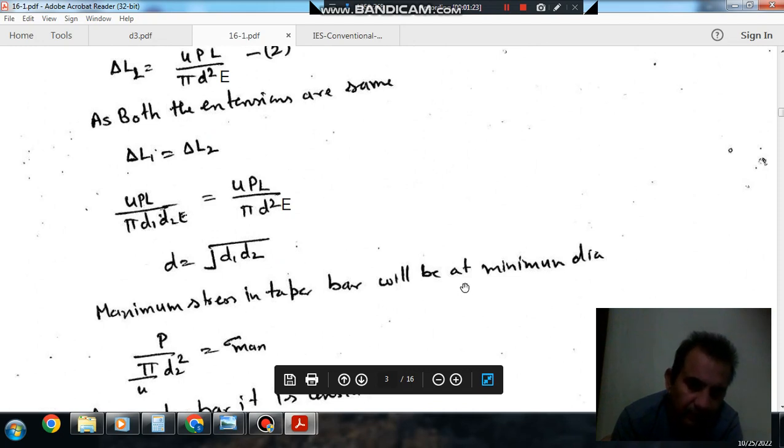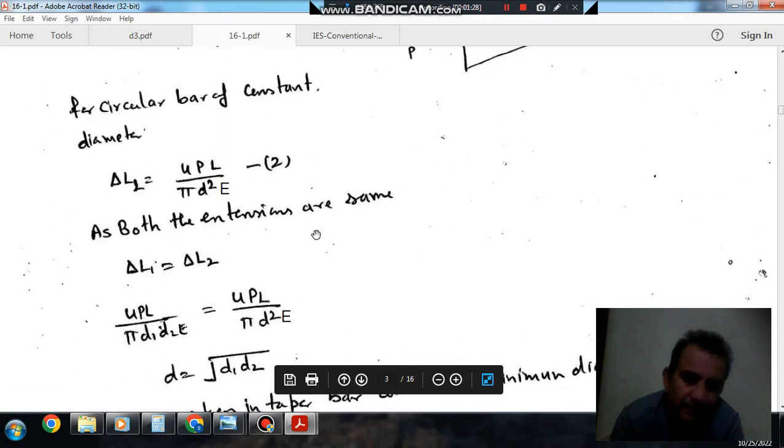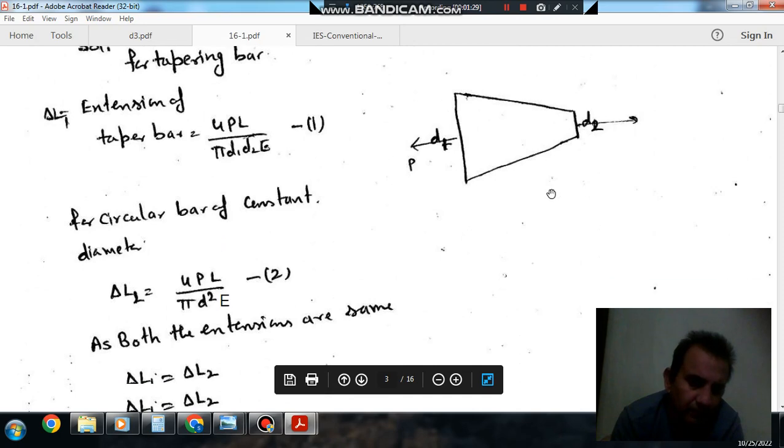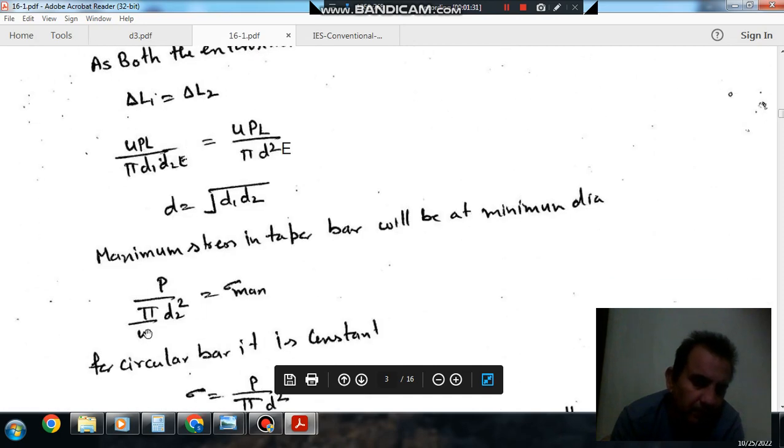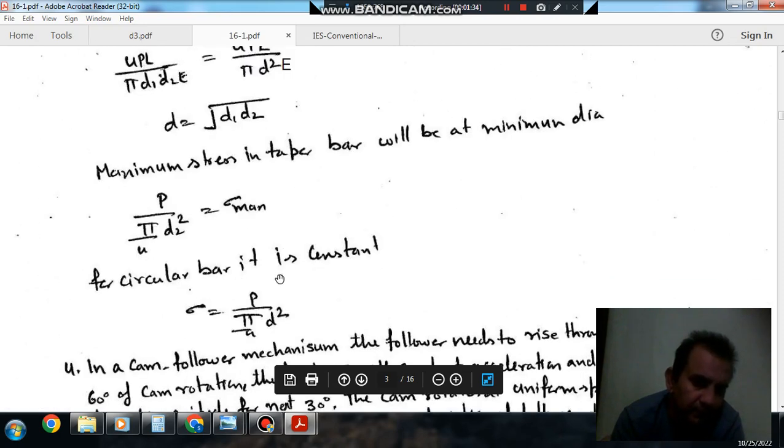And maximum stress in the taper bar will occur at the minimum diameter. So minimum diameter here is d2, so maximum stress will be P divided by π by 4 d2 square. And in circular bars the maximum stress is constant, so the same stress will occur.